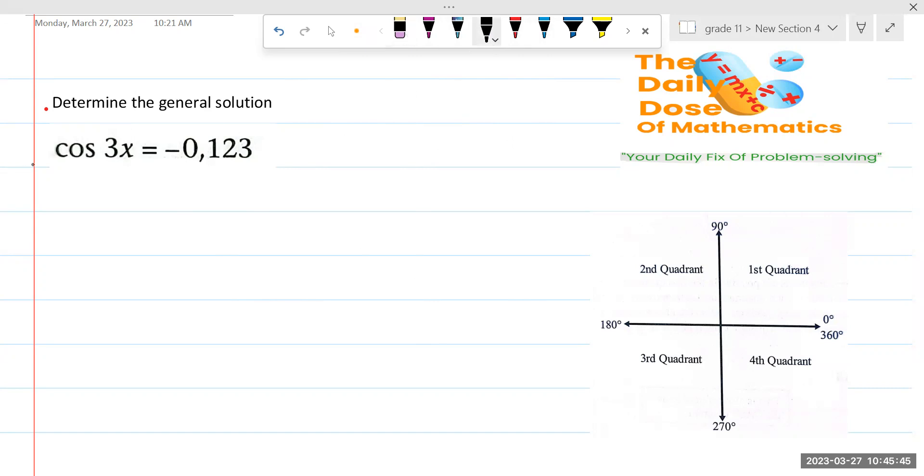Nothing has changed. You will then say, okay, let's go and get the reference angle. So if we're going to get the reference angle, it says that 3x is going to be equaling to the cosine of 0.123. That one is fine. And then what are you getting here? You're getting the reference angle.